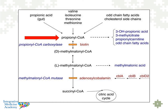Pulling back to a broader biochemical standpoint, there are a number of entry points into propionyl coenzyme A: odd-chain fatty acids, certain amino acids like valine, isoleucine, threonine, and methionine — methionine coming off the methylation cycle — and even propionic acid from gut bacteria. Propionyl coenzyme A becomes D-methylmalonyl coenzyme A, which gets converted to the L form. When there is a B12 deficiency, you will see an increase of methylmalonic acid.